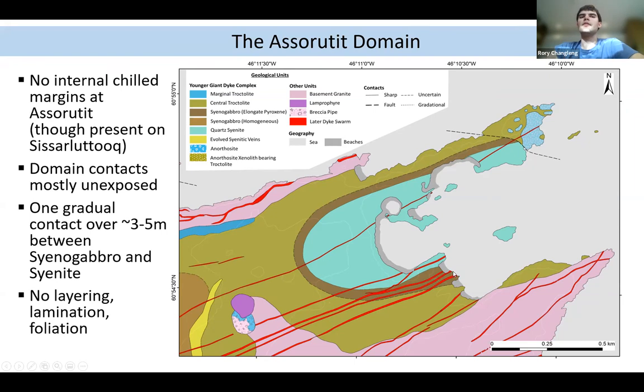But there's no layering or lamination or foliation seen at all in this area, with the exception of some orientation in the syenogabbro of the magnetites and clinopyroxenes, which are loosely orientated parallel to the dike and around the domain margins.